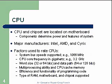The CPU and chipsets are located on the motherboard, and these components determine the power and features of the system. Major manufacturers are Intel, AMD, and Cyrix. Intel by far holds over 80% of all CPUs ever made. Intel still carries a considerable lead. AMD was catching up for a while, but then Intel took off again. We'll talk about some of the advantages of each chip.